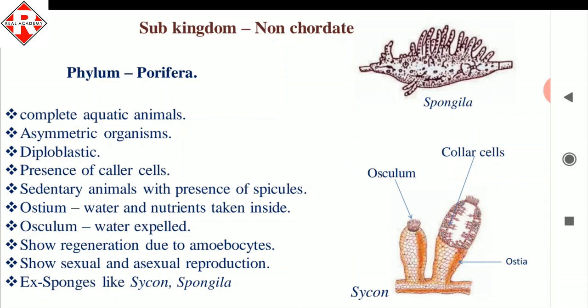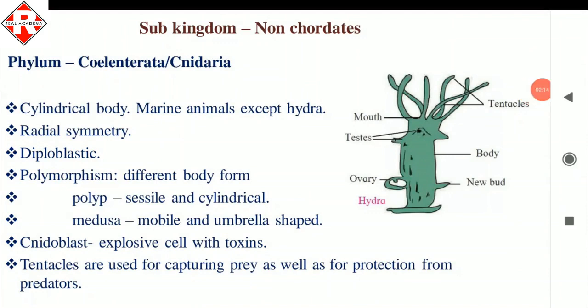Porifera show regeneration due to amoebocytes, which are totipotent cells capable of creating different types of cells. They show both sexual and asexual reproduction. Examples are sponges such as Sycon and Spongilla.